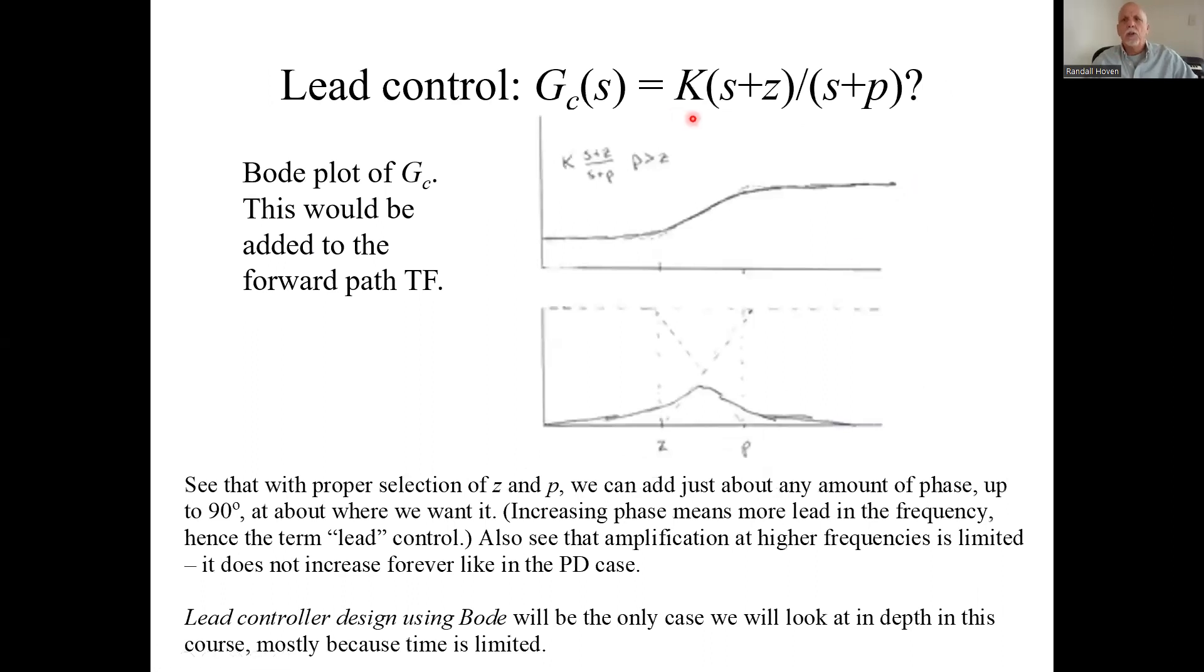In fact, what we're going to do is this guy called lead controller. We're going to add a zero and a pole, and this P is going to be greater than the Z. That makes it lead control. It advances the phase. So here's the Bode plot of what that adds to the forward path Bode plot.